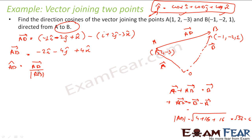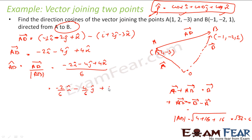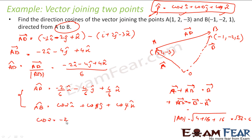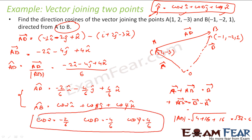The unit vector of AB = (−2î − 4ĵ + 4k̂) / 6 = (−2/6)î + (−4/6)ĵ + (4/6)k̂. Since the unit vector equals cos α î + cos β ĵ + cos γ k̂, comparing gives: cos α = −2/6, cos β = −4/6, cos γ = 4/6. These are the direction cosines of the vector.